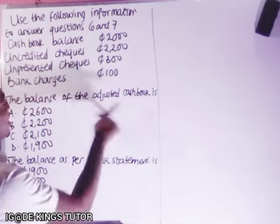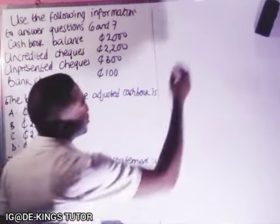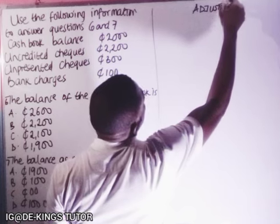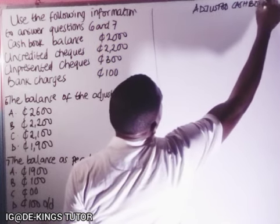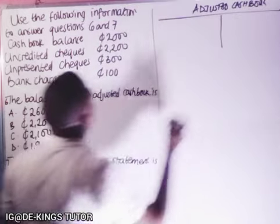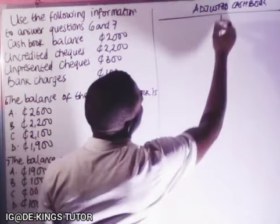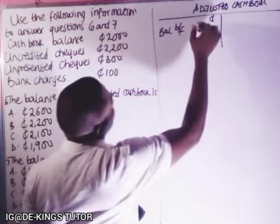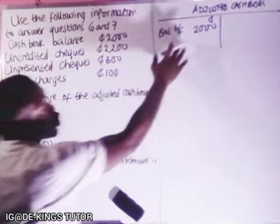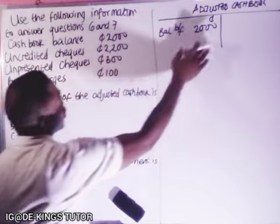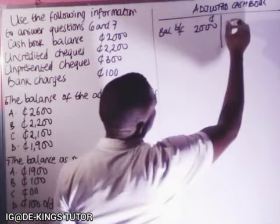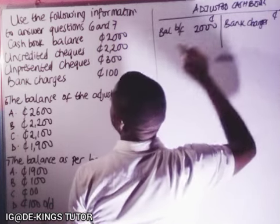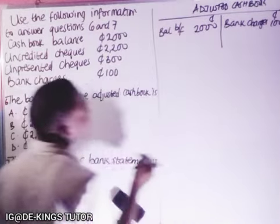For the adjusted cash book: the cash book balance is 2,000 cedis, so the balance brought forward is 2,000. Now, uncredited cheques and unpresented cheques do NOT come into the adjusted cash book. However, bank charges DO come here, so we enter bank charges as 100 cedis.